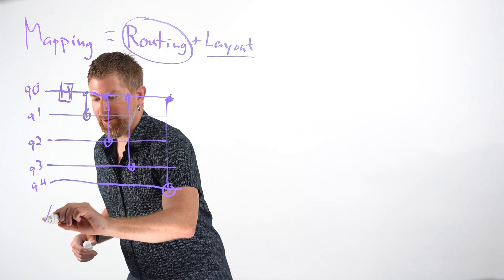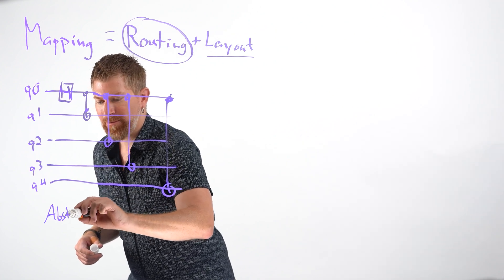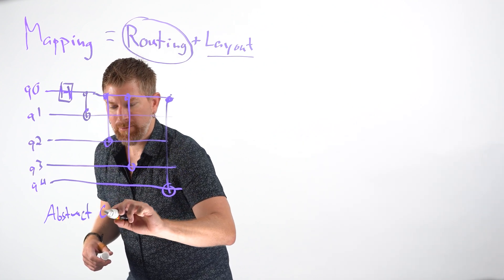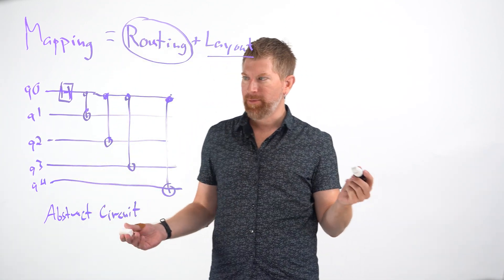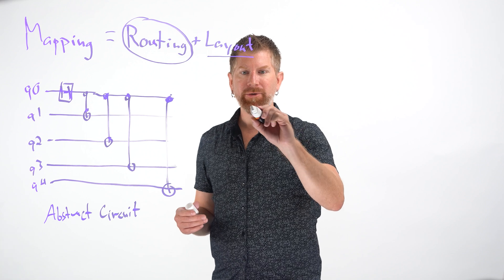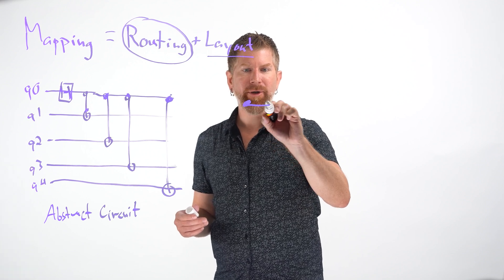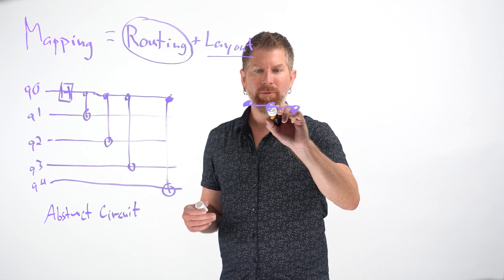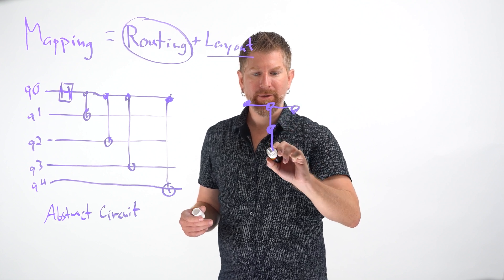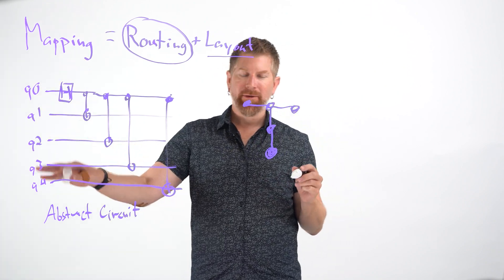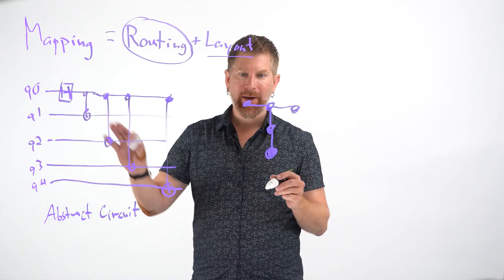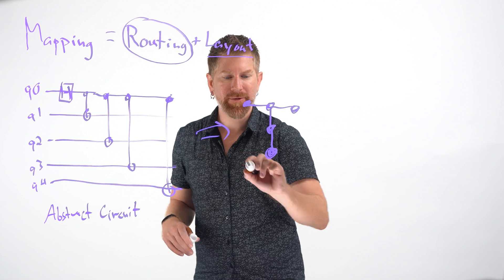I'm going to call this an abstract circuit because we're going to map this onto, say, a physical type of layout, which looks like this. So you've got a qubit up here, a qubit here, one here. Say it looks like a T, like that. Well, we need to get the quantum circuit from this abstract circuit to this physical layout.